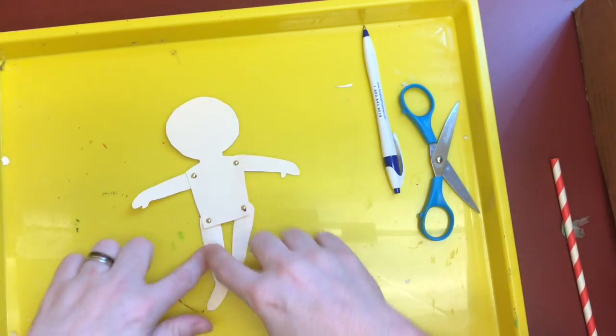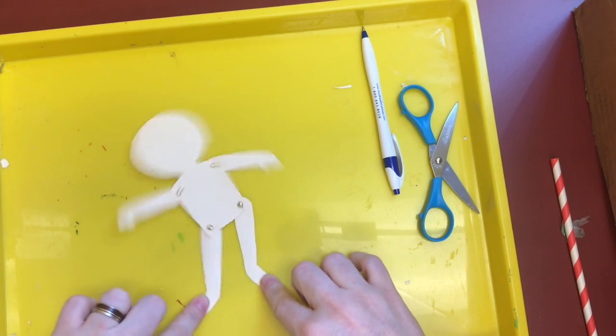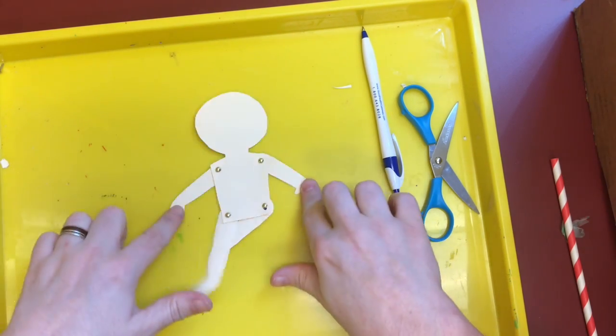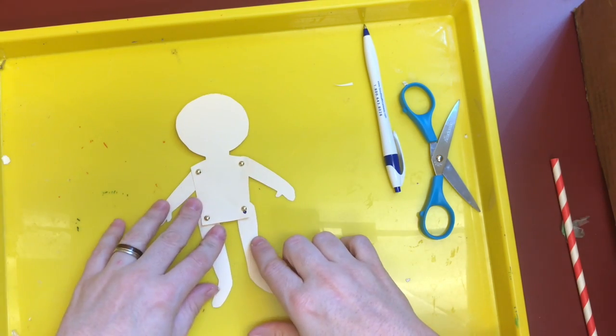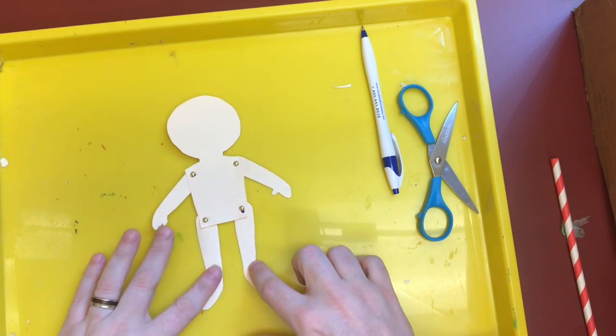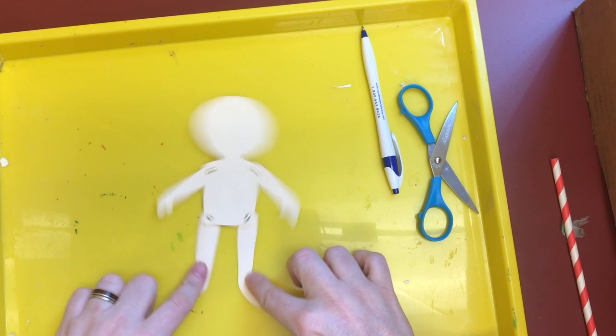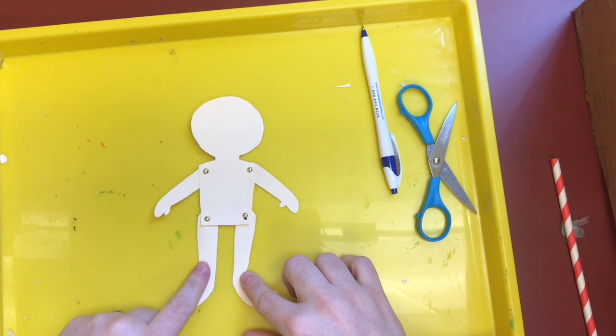So as you can see, we've got our puppet and it can move and dance, but it doesn't really look like much, does it? So now we need to decorate it. And there are lots of different things you can do to decorate your puppet.